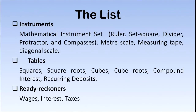Now, what material can we have in a mathematics resource room? The list is very long. Number one is mathematical instrument sets, under which we can have ruler, set square, divider, protractor, and compasses. We can also have meter scale, measuring tape, and diagonal scale.